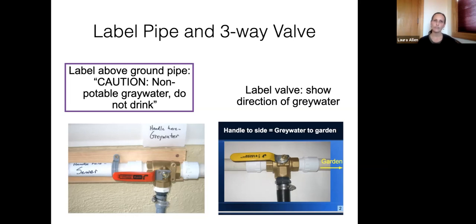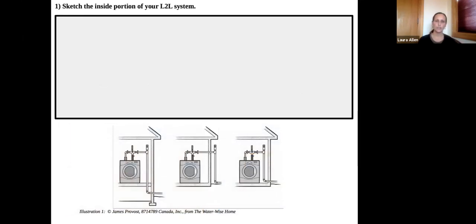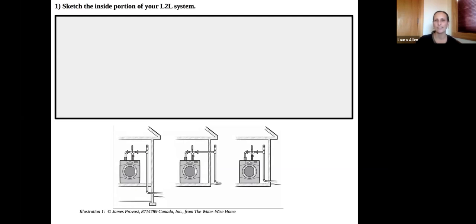With that info you can sketch out how the inside of your system would look. The worksheet shows three common scenarios: going through the crawl space, going out then down, or going down then out. You can sketch your own system thinking about how you'll get your laundry graywater from inside to outside. The only part of the system where you need to be cautious is getting outside the home — if your wall is finished with sheetrock, there can be insulation, electrical lines, vents, pipes, and even gas lines behind it. You want to be sure you drill in the right spot.